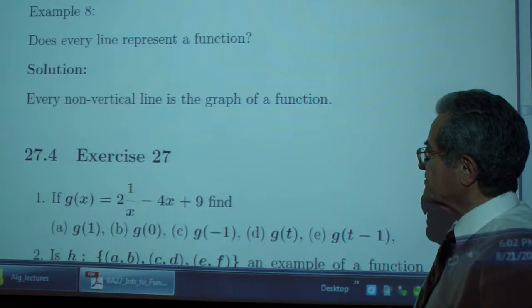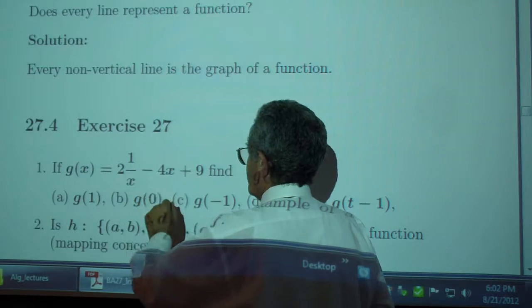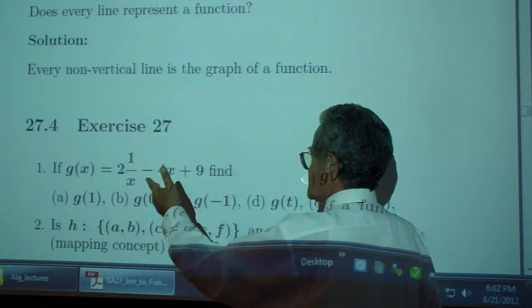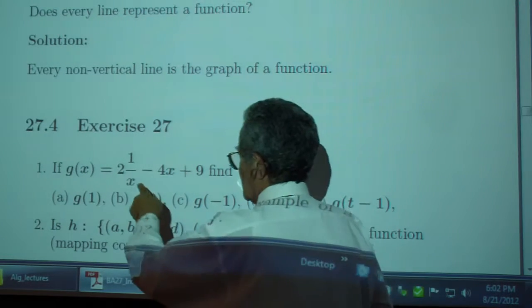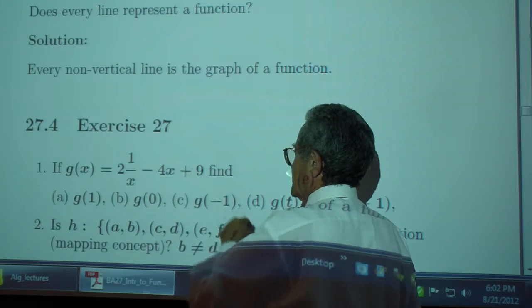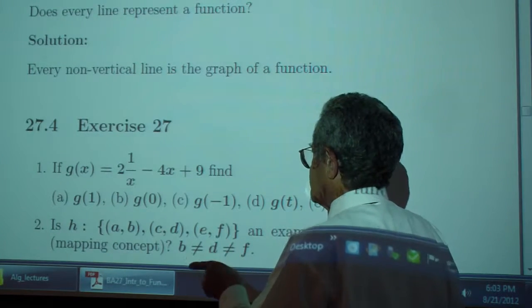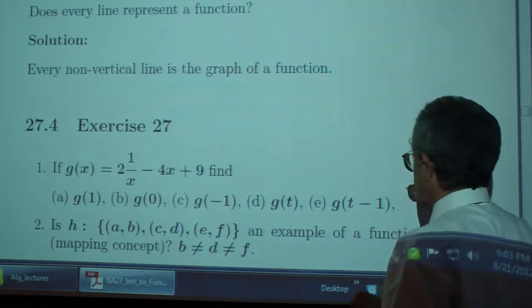Okay. Exercises. Suppose you have g of x, which is 2 times 1 over x, minus 4x plus 9. Find g of 1, g of 0, g of negative 1, g of t, g of t minus 1.